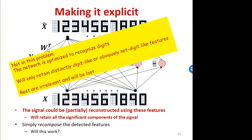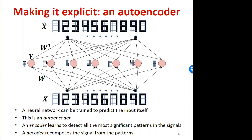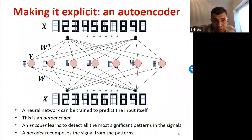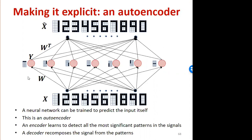I can make this explicit by explicitly having these neurons go back and actually learn to reconstruct the input — this is an autoencoder. An autoencoder has two components: an encoder which learns to detect the most significant patterns in the input, and a decoder which recomposes the signal from the patterns. Let's consider the simplest autoencoder with a single hidden unit with linear activation.